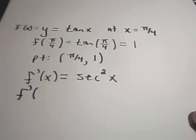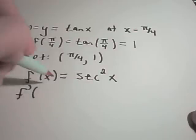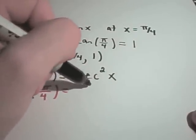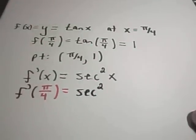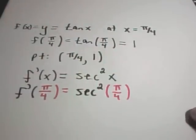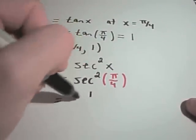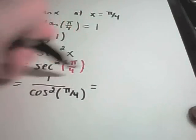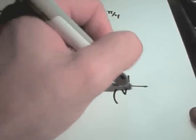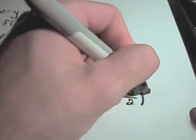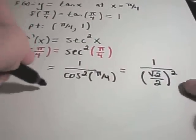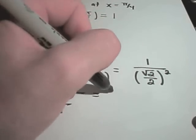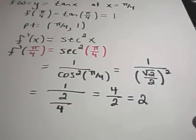To find the slope of the tangent line, I take the derivative. The derivative of tangent x is secant squared of x. Evaluating secant squared at pi over 4: rewriting as 1 over cosine squared of pi over 4. Cosine of pi over 4 is root 2 over 2, and squaring gives 2 over 4. Flipping and multiplying gives 4 over 2, or 2, as the slope.